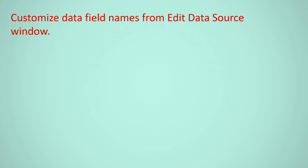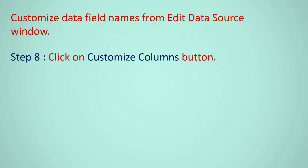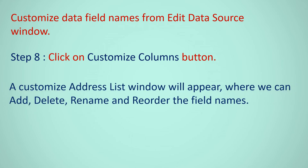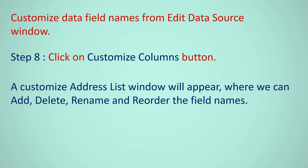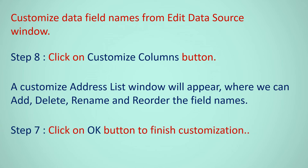To customize the data file from the Edit Data Source window, click on the Customize Column button. A Customize Address List window will appear where you can Add, Delete, Rename, and Reorder the field names. Click OK to finish customization.